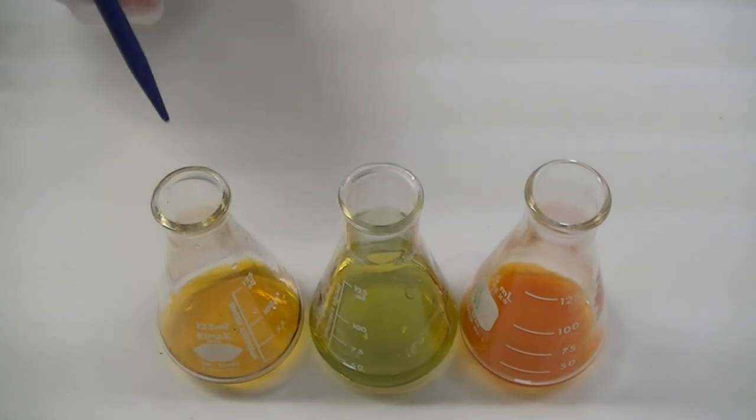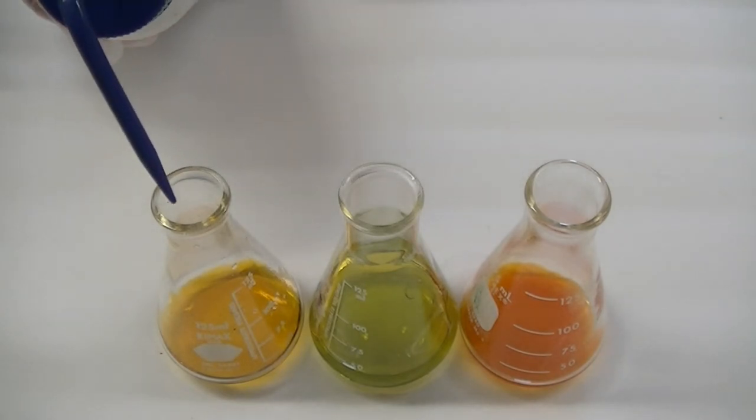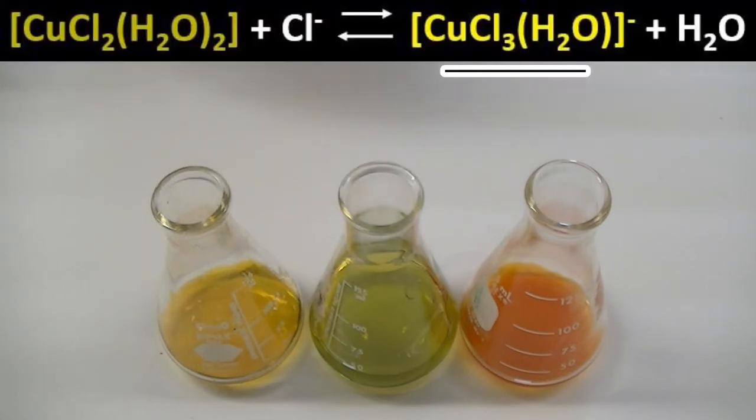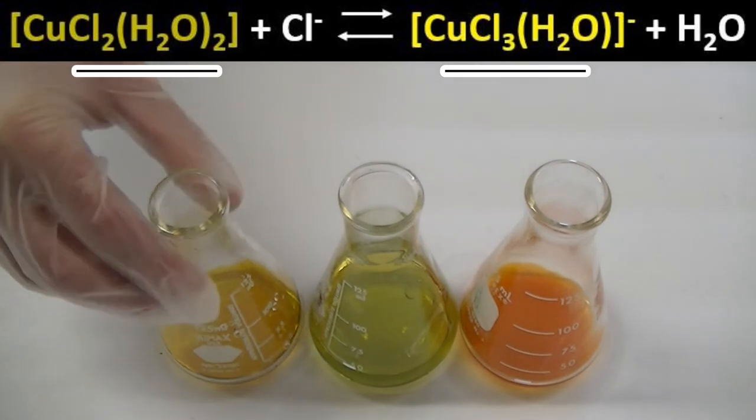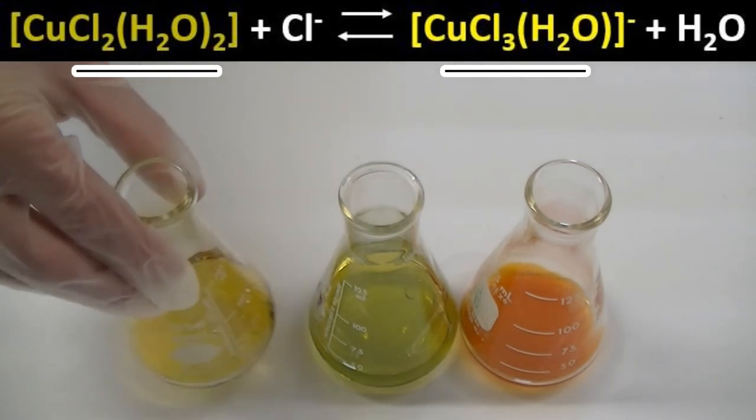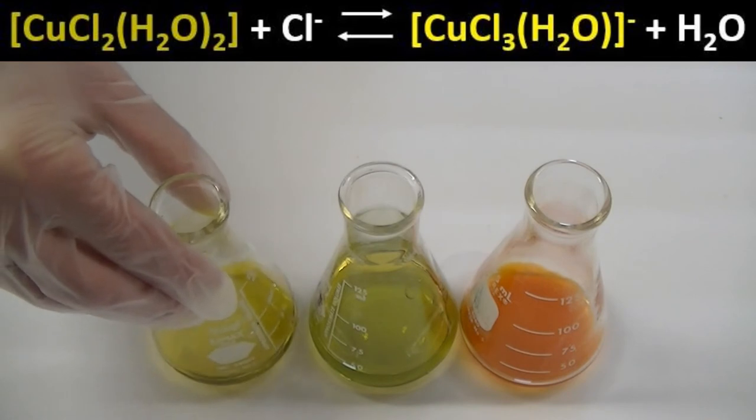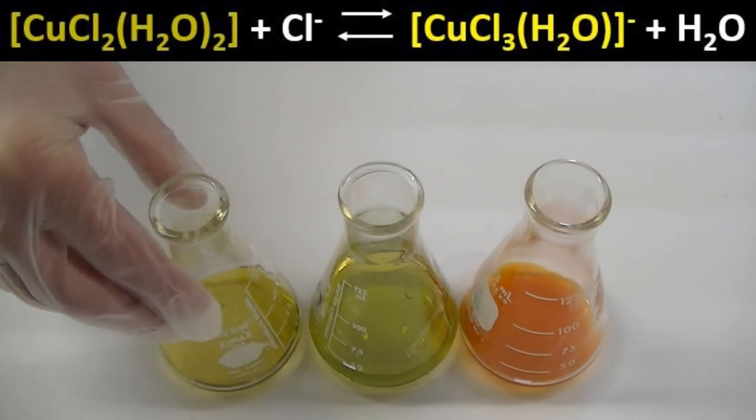Further addition of water induced a color change from yellow to green-yellow. This color change involves the equilibrium between trichloro and dichloro-copper complexes, as seen in the equation above. Again, water shifts the equilibrium from right to left, inducing the color change observed.